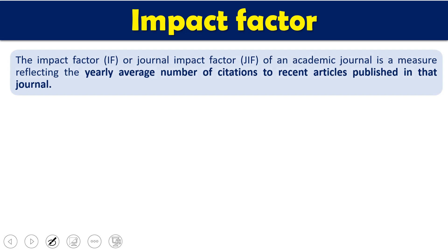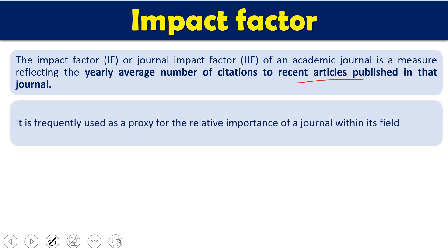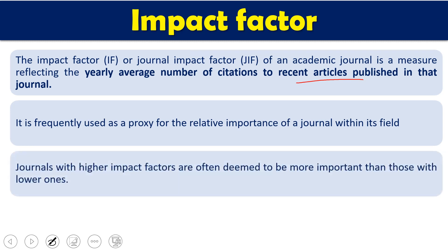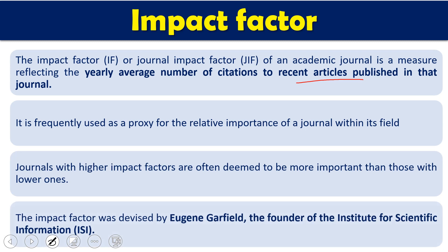So what is impact factor? Impact factor, also called journal impact factor (JIF or IF), is a measure for any academic journal that reflects the yearly average number of citations to recent articles published in that journal. It is a quality measure of a journal. There are two types of matrices: journal matrices, which measure the quality of journals, and author matrices, which tell you about authors. Impact factor is a journal matrix. It is frequently used as a proxy for the relative importance of a journal within its field. A journal with a high impact factor is treated as more important, while one with a lower impact factor is treated as less important in that particular field.